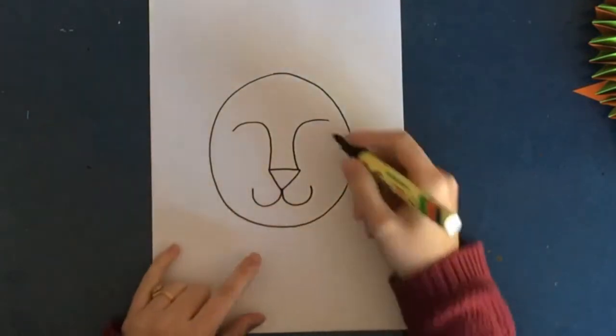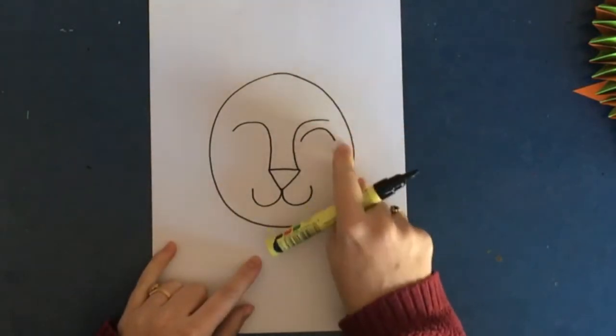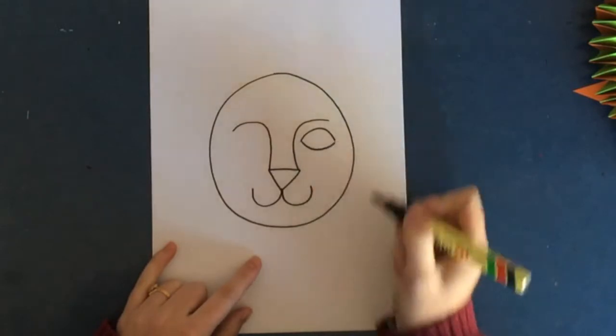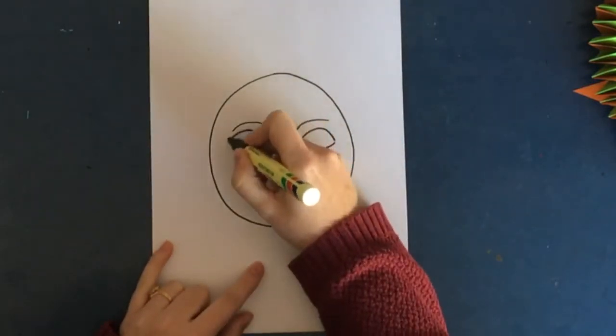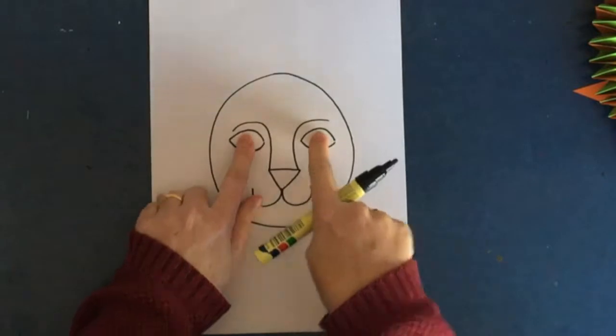When you've done that, now we need to look at the eyes. So do a half circle on one side and a half circle underneath that, and then do the same thing on the other side there, and then you can add the pupils.